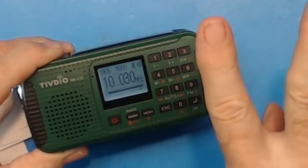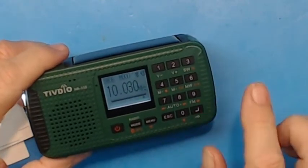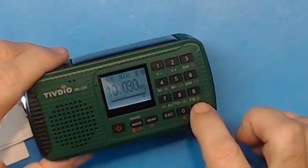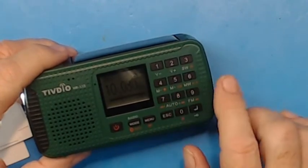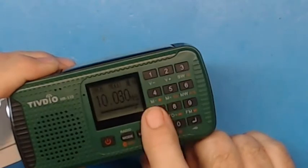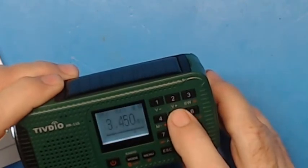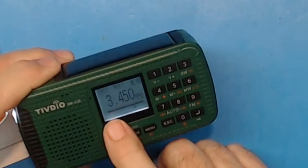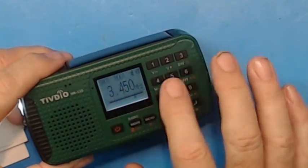Method three is you could use a couple of different methods to store a frequency in memory, and then if you want to go through those memories you use the four and five keys, which say memory minus and memory plus. Hit the five key and it went to a memory previously stored, which is 3.450.